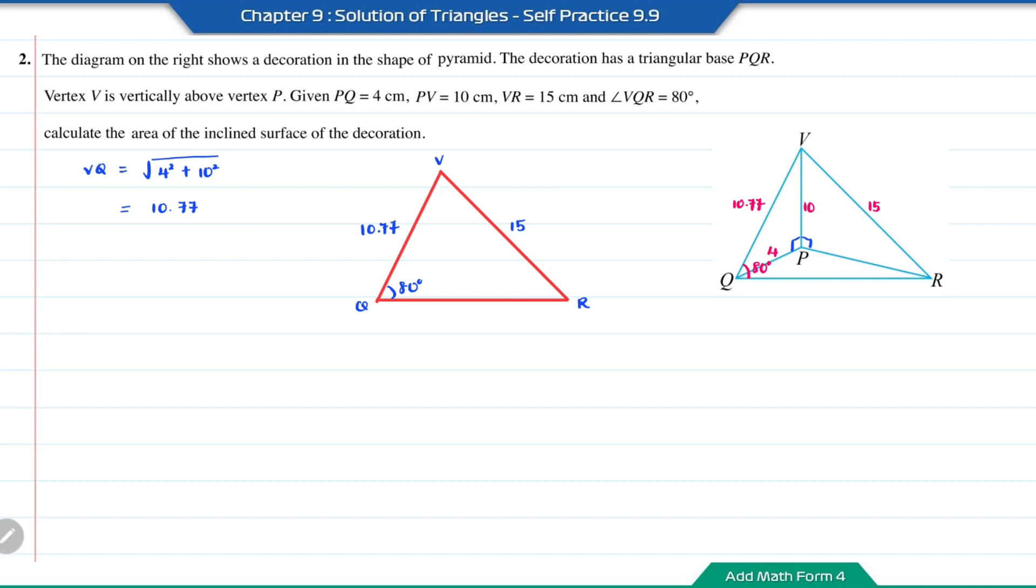Based on the information we have, the 80 degrees is opposite the 15 cm side, whereas 10.77 is opposite angle R. Using the sine rule, we will find angle R first. 10.77 over sine angle R equals 15 over sine 80 degrees.